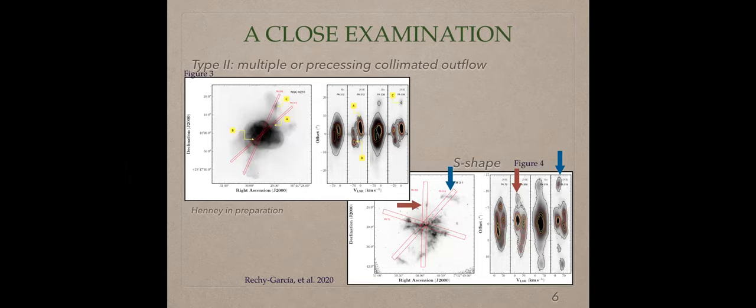Other planetary nebulae that present this kind of jet-like is NGC 240. The jet-like is pointed with the red arrows in the image and in the position velocity diagrams. The second type of jet that we found is multiple or precessing collimated outflows. For example, in the case of the NGC 6210, this is a turtle nebula. You can observe two pairs of outflows.